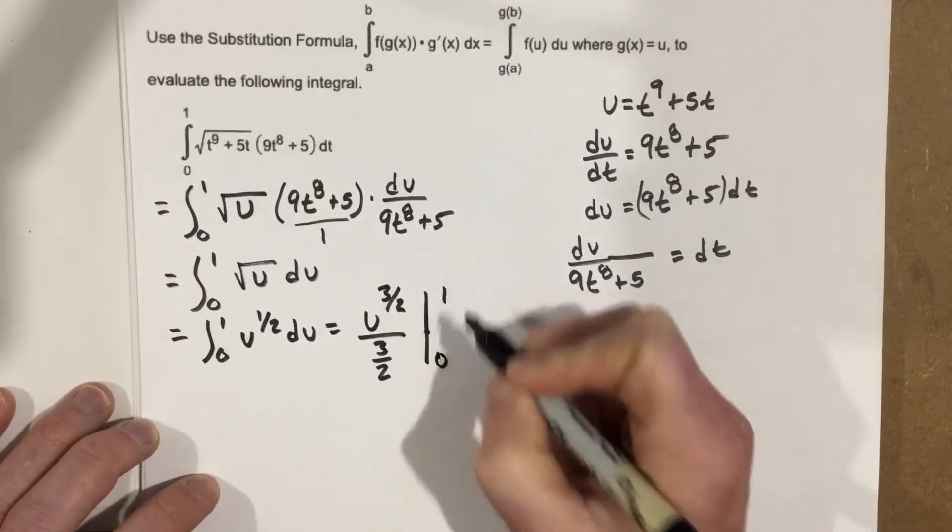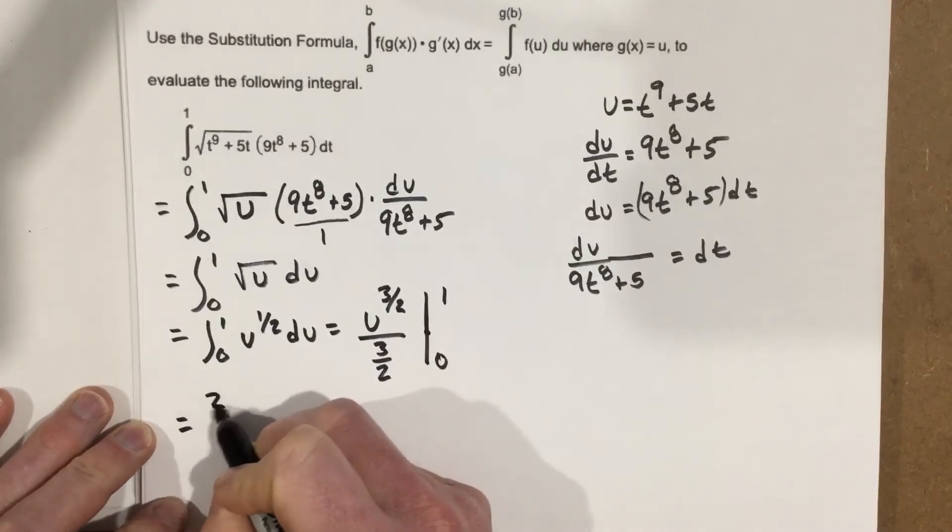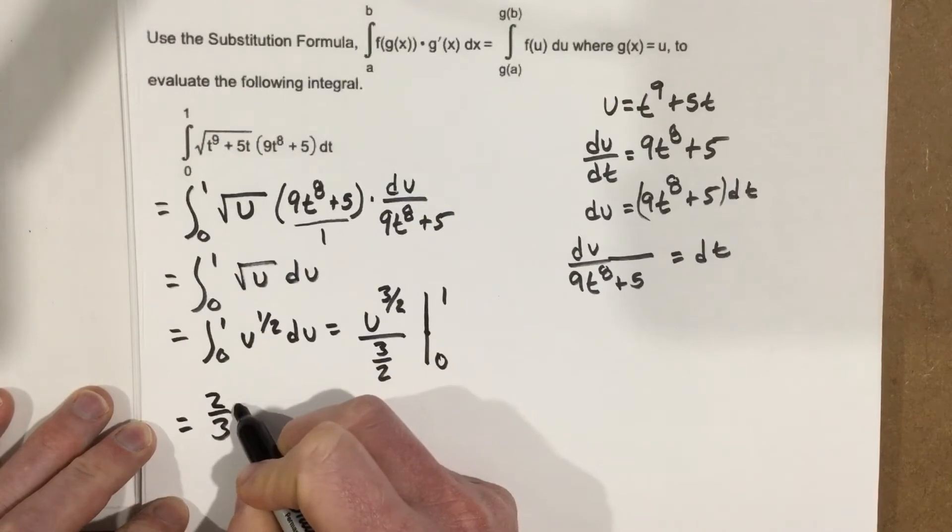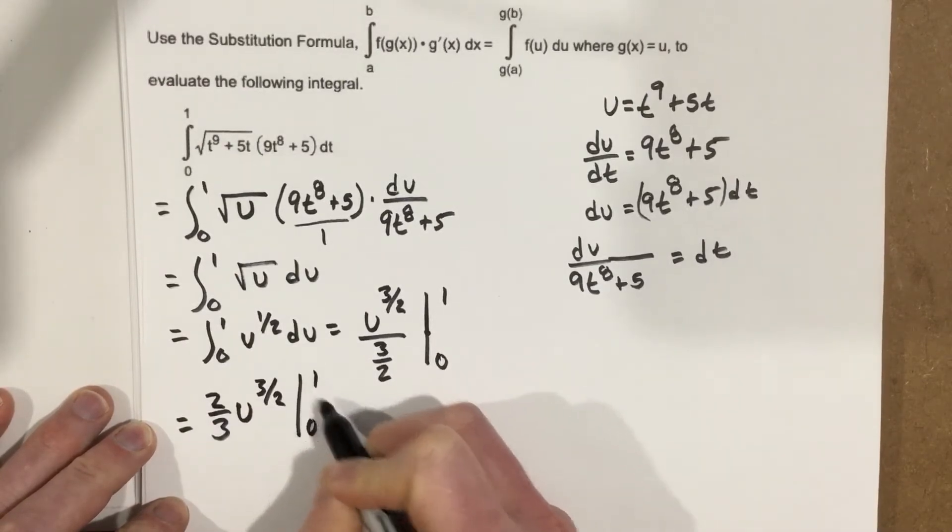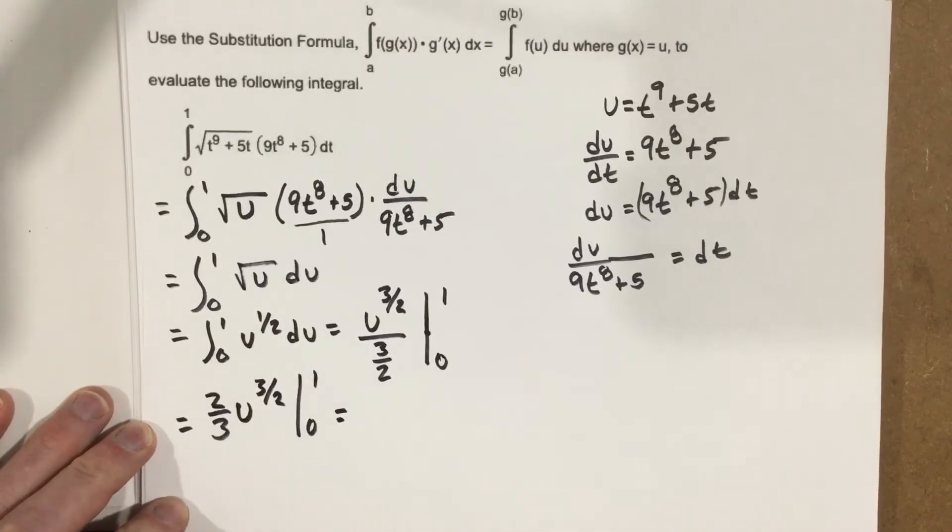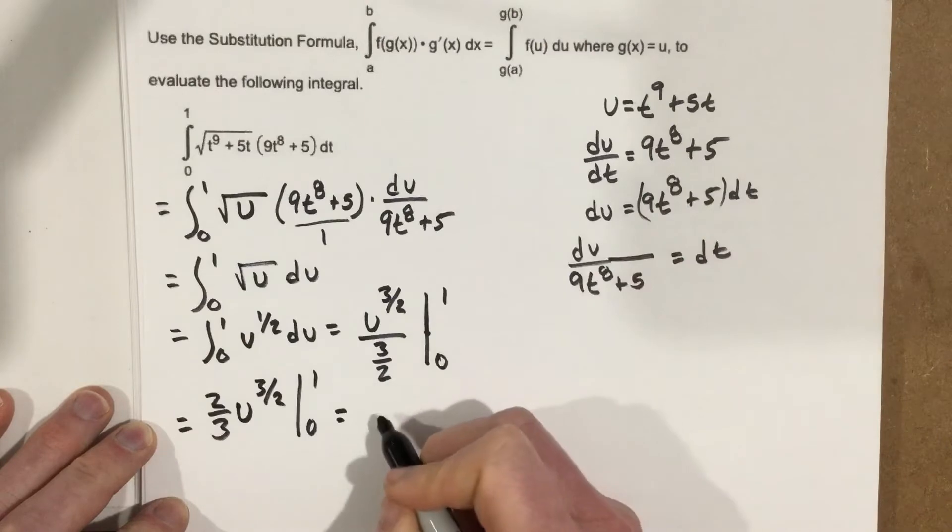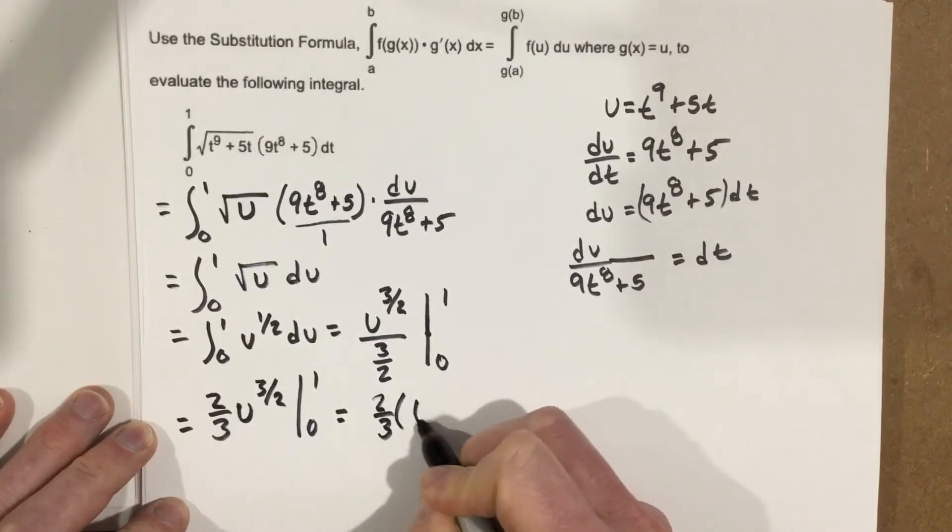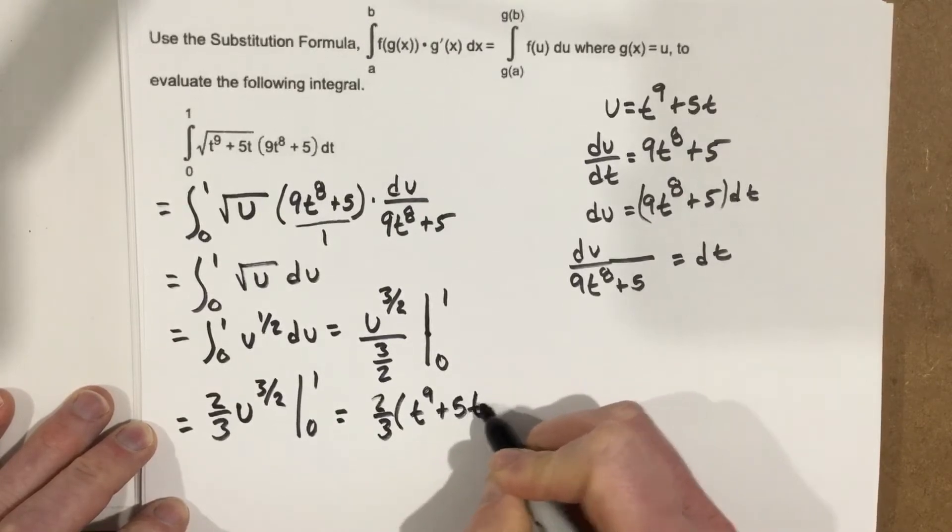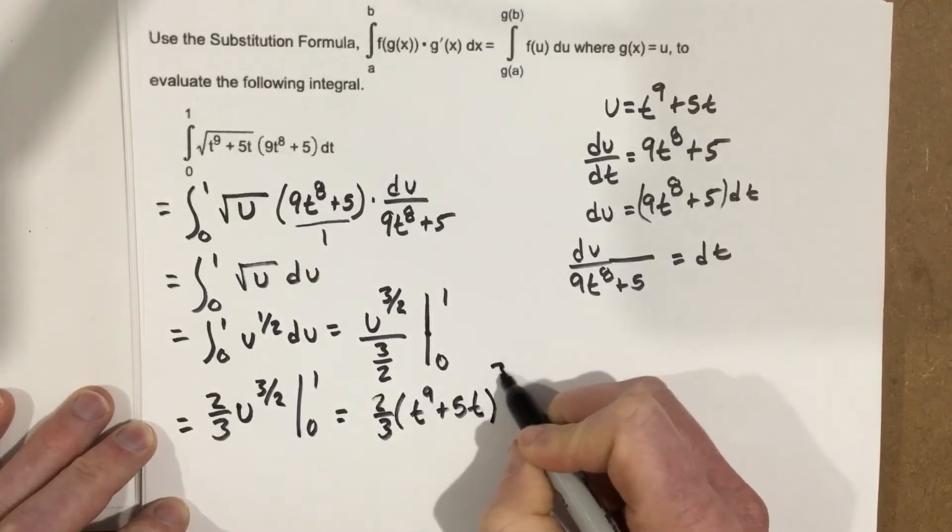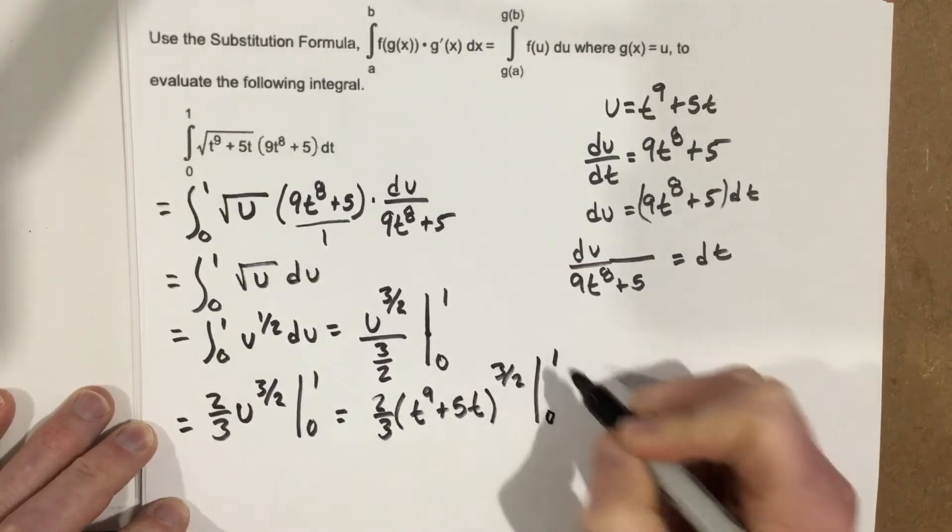From 0 to 1. I'm going to rewrite that, though, as 2/3, right? You flip and multiply the bottom fraction. 2/3 u to the 3/2 from 0 to 1. And the last thing I need to do is plug in what u is. Well, u is t to the 9th plus 5t, so I'm going to have 2/3, parenthesis, t to the 9th plus 5t to the 3/2. And I want to evaluate this for 1 and 0.